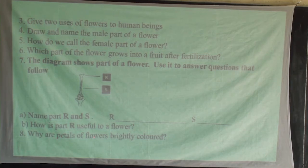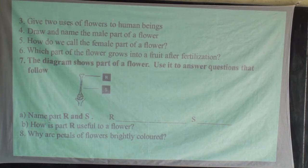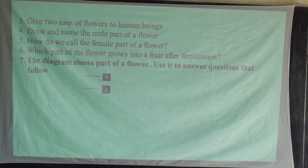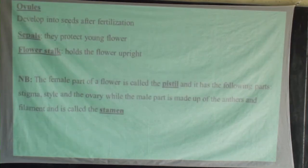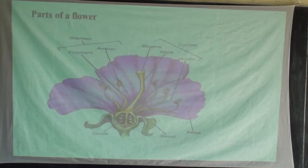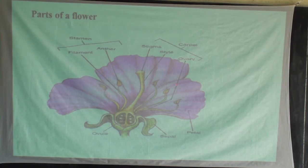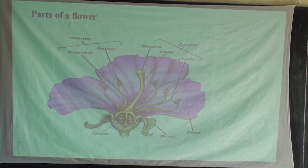We are also asked: why are petals of flowers brightly colored? Going back to the flower, you can see that the petals are brightly colored. These bright colors attract pollinators. So we can be asked the importance of petals — the petals attract pollinators, that's why they are brightly colored.